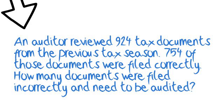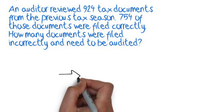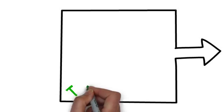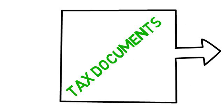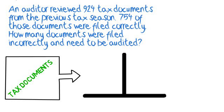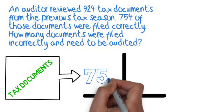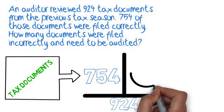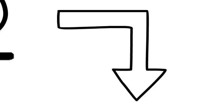Our second problem says: An auditor reviewed 924 documents from the previous tax season. 754 of those documents were filed correctly. How many documents were filed incorrectly and need to be audited? For the second problem, make sure you read carefully and identify what the problem is about. Notice that 754 represents some of the tax documents and is written in the parts section. But 924 is talking about all of the tax documents and is written on the total line. When you are trying to find a missing part, your number sentence will be a subtraction problem.